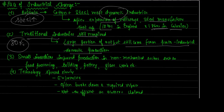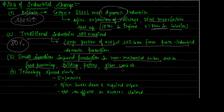Small innovations improved production in non-mechanized sectors such as food processing, building, pottery, and glasswork. These small innovations improved food processing, building, pottery, and glasswork production, even without the radical inventions seen in the big factory industries.